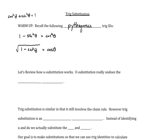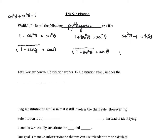For our second Pythagorean identity: one plus tangent squared theta equals secant squared theta. Taking the square root of both sides gives the square root of one plus tangent squared theta equals secant theta. For the third, we manipulate the previous one: secant squared theta minus one equals tangent squared theta, so the square root of secant squared theta minus one equals tangent theta.